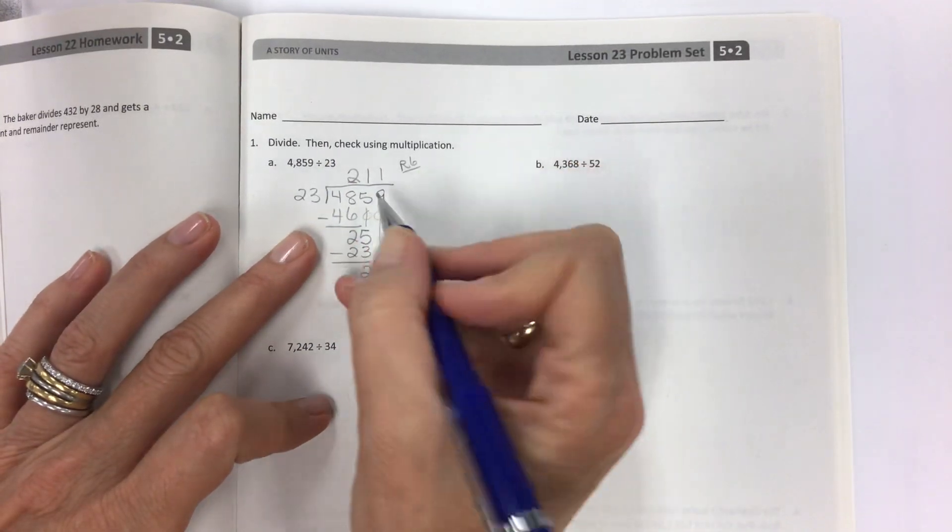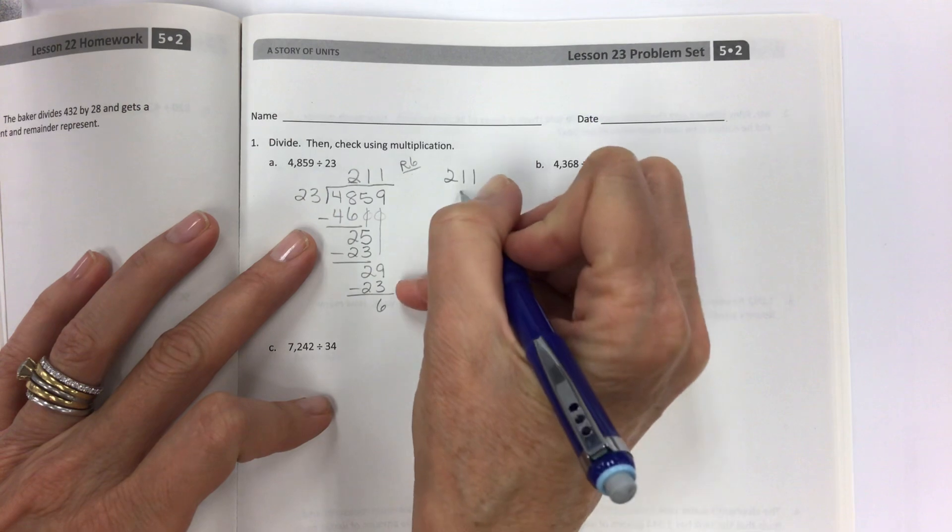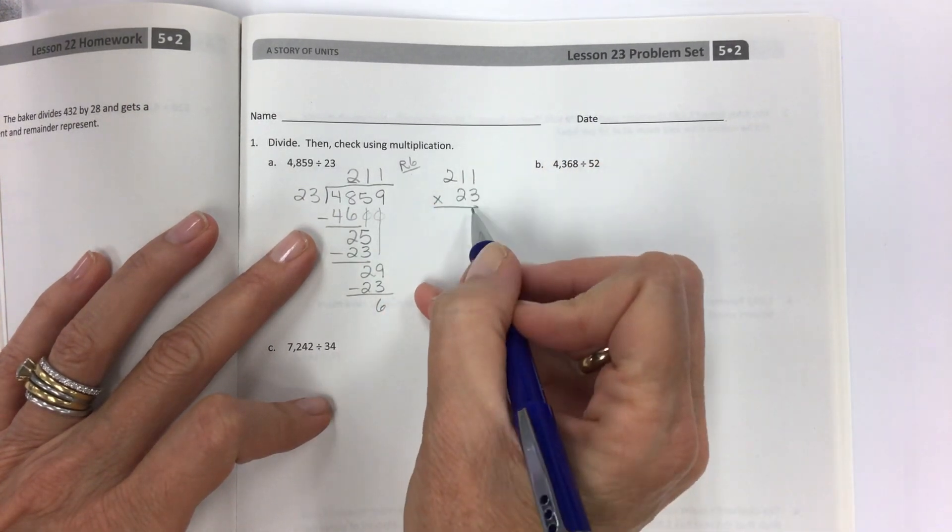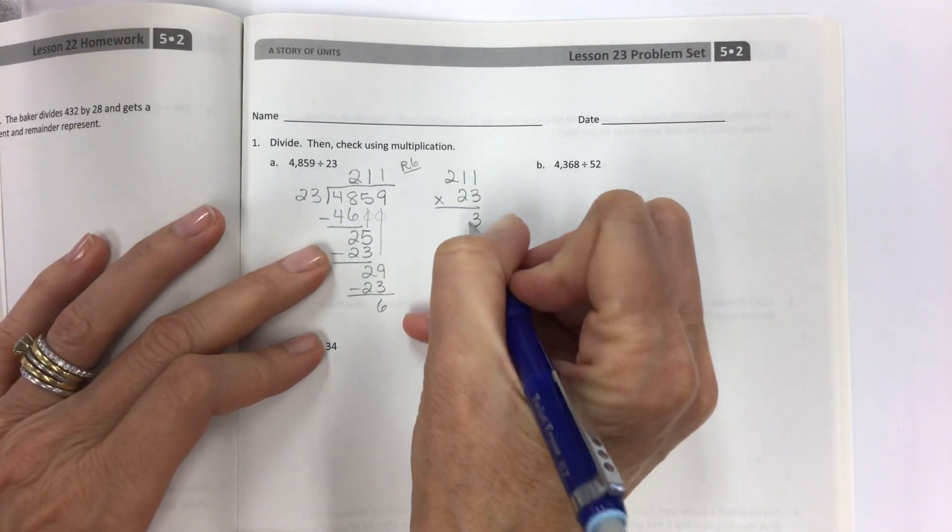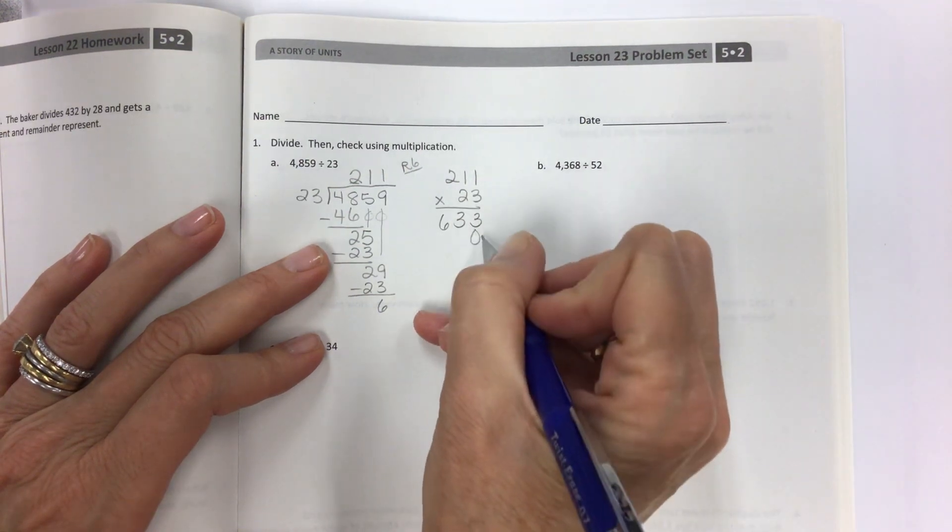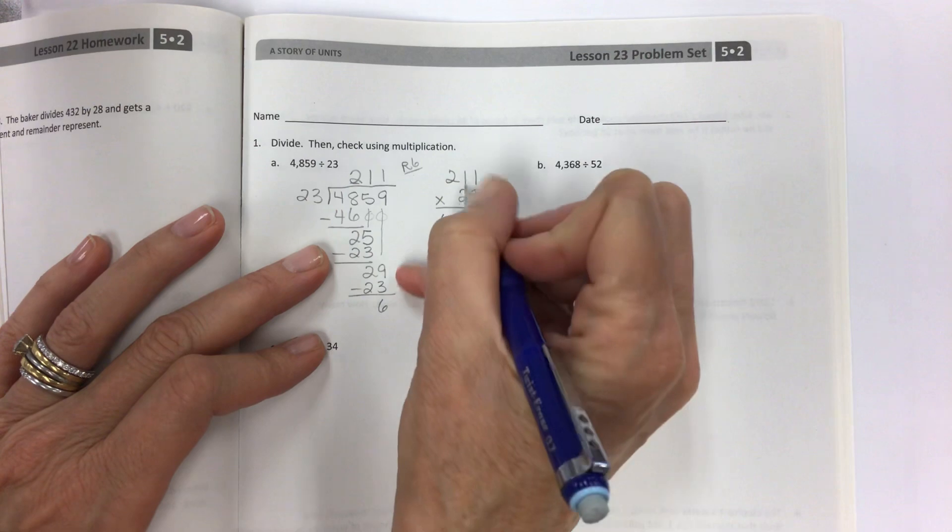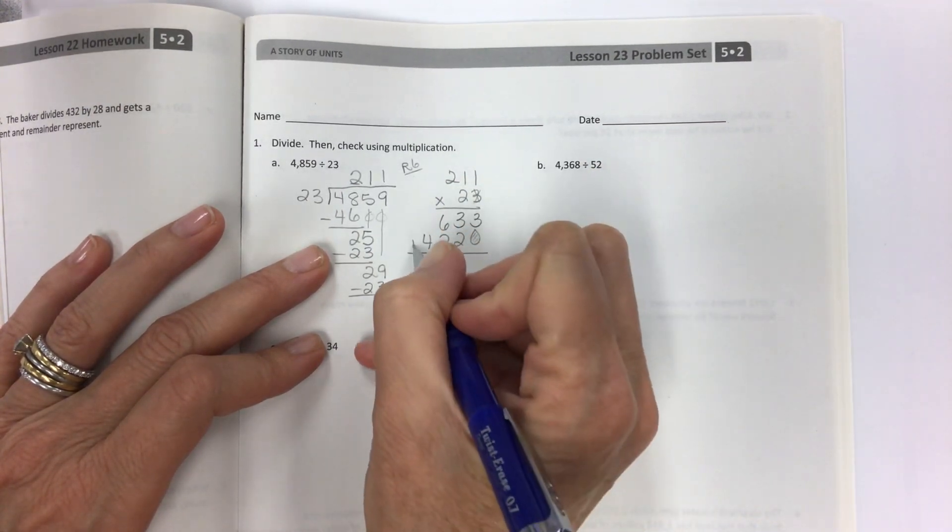Don't forget to write your remainder up here. And now do your check. Look at how big our quotient is. Our quotient needs to go on the top because I have a 3 by 2 multiplication. 3 times 1 is 3, 3 times 1 is 3, 3 times 2 is 6. Hold this spot because this is our ghost 0. 2 times 1 is 2, 2 times 1 is 2, and 2 times 2 is 4.